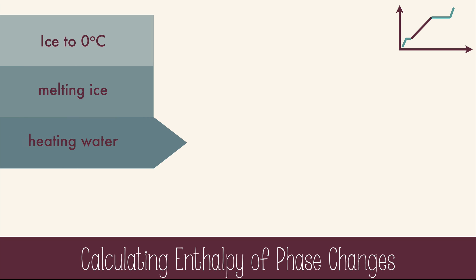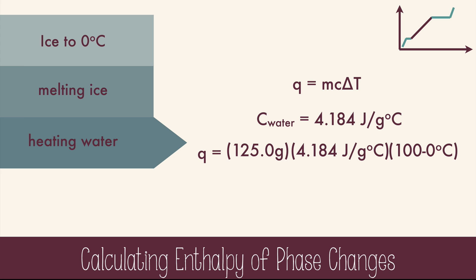Heating water involves a change in temperature, so we're going to use q equals mc delta t and the specific heat of liquid water. We'll plug in the mass and specific heat of water, the final temperature minus the initial, which in this case is 100 minus 0, and we get 52,300 joules.